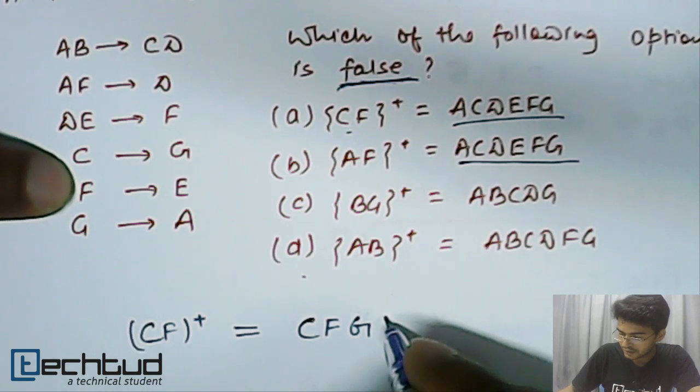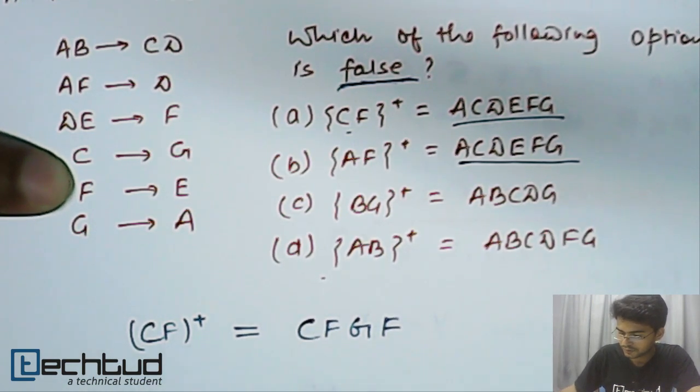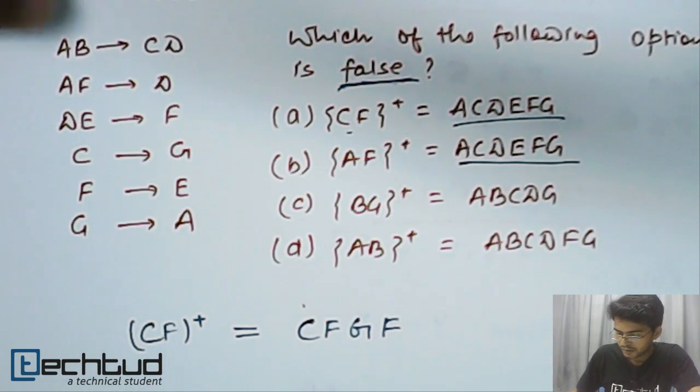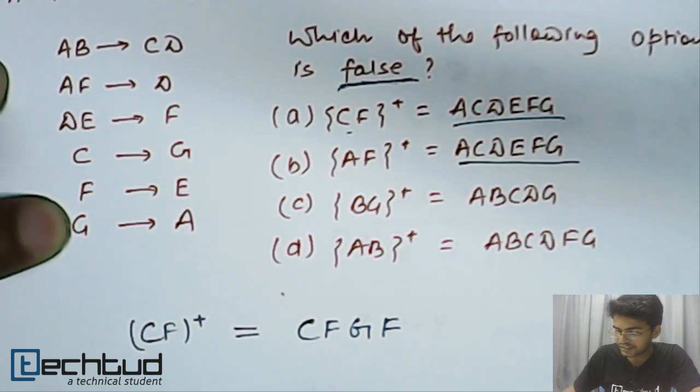Now, F can determine E. So, E will be there. Okay. Now, let's see. This G can determine A.